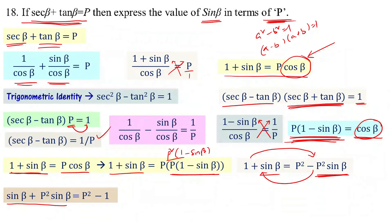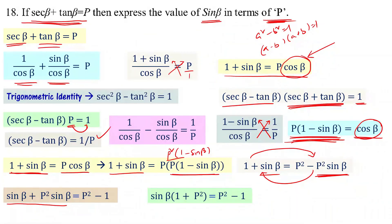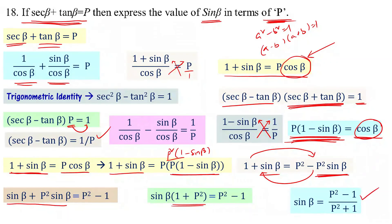Taking sin beta as common: sin beta into 1 plus p squared equal to p squared minus 1. Transposing gives sin beta equal to p squared minus 1 divided by p squared plus 1. So given sec beta plus tan beta equal to p, we have sin beta equal to p squared minus 1 divided by p squared plus 1.